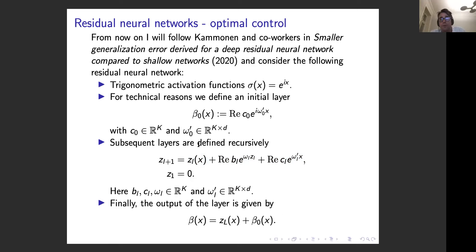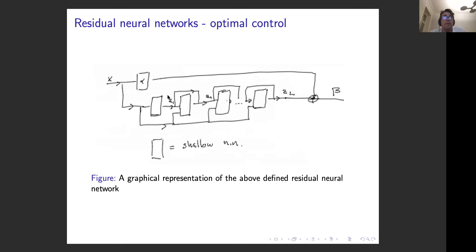The final output is the initial shallow layer plus the output of the residual layers. In the picture: data comes in, goes through a shallow neural network (β₀), then through the residual network with skip connections all the way through, plus a connection from x throughout the network. At the end you take the sum of z_L and the output of the initial layer.